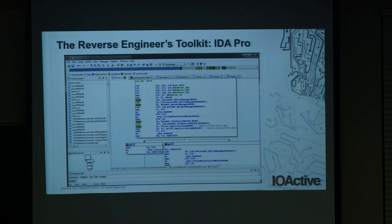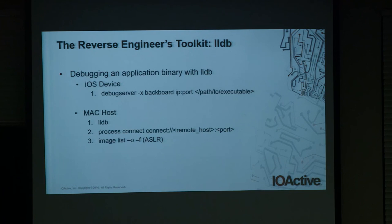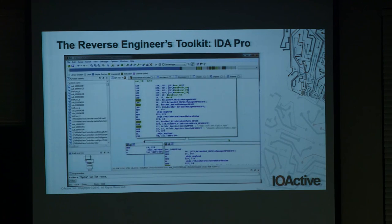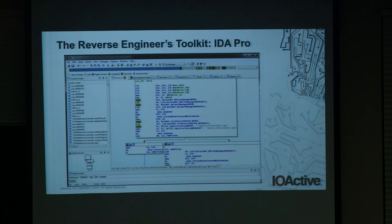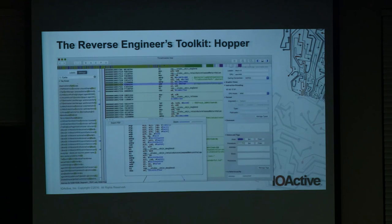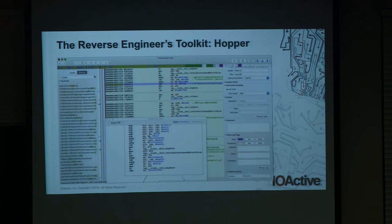Hopper is a cheaper alternative, costing a couple hundred dollars. It's not as feature-rich as IDA Pro, but it is enough to get you started. Then there is LLDB, the replacement for GDB. LLDB uses a client-server relationship: copy the debug server binary to your iOS device, give it proper entitlements, and use the debug server to launch the application you want to debug. From your host machine, connect to the debug server.